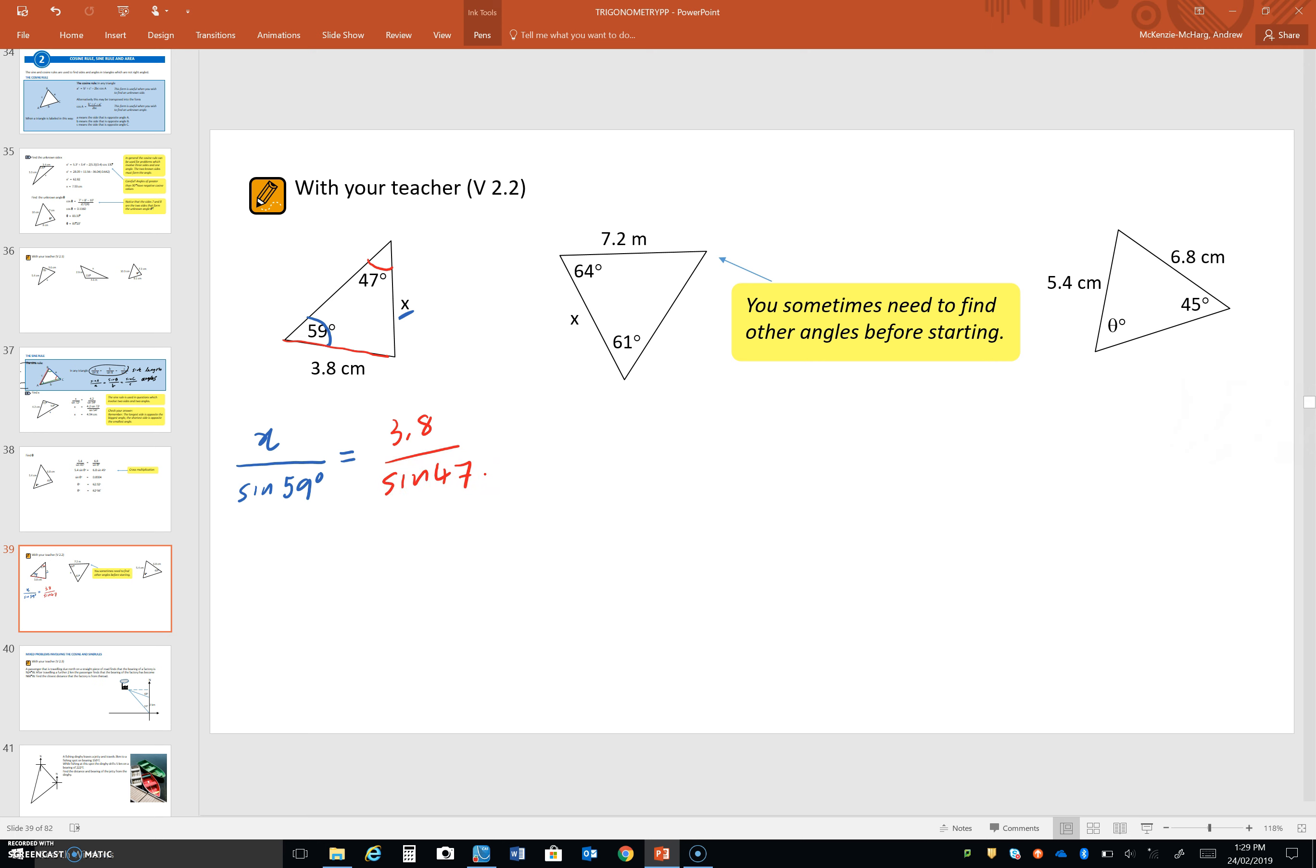Okay, so from here, it's just a matter of rearranging this. So, that involves this sine of 59 coming over to the other side and doing the opposite of divide, multiply.